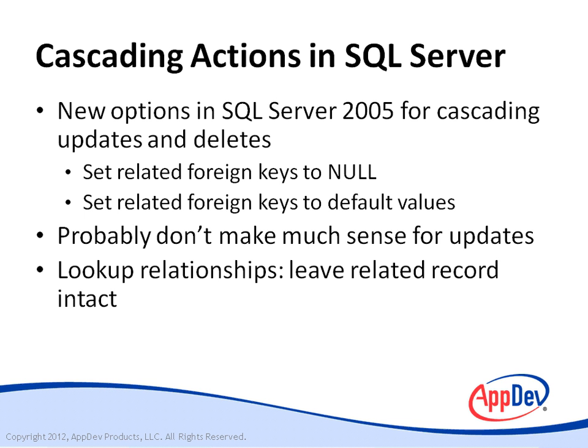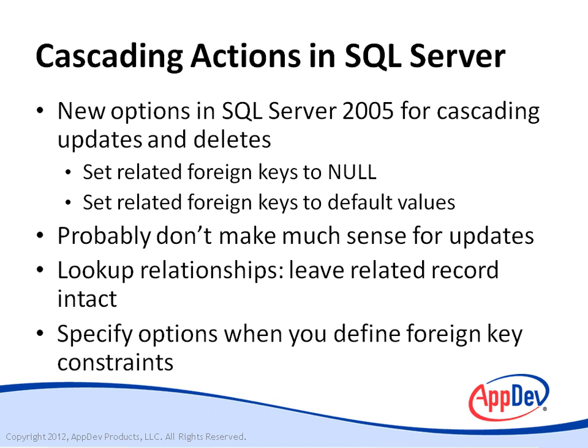However, for lookup relationships, you can use the set null or set default option to leave the related record intact. For example, if you delete a department, you probably want to leave the instructors in that department intact — you can have their department assignment set to null or to a default all-purpose department, and then fill in the correct new department assignments later. You specify cascade options when you define foreign key constraints. The new options in SQL Server 2005 match similar capabilities for the foreign key constraints of data table objects within ADO.NET.